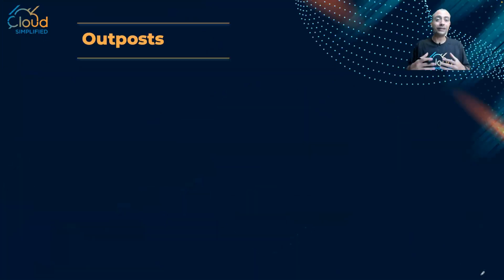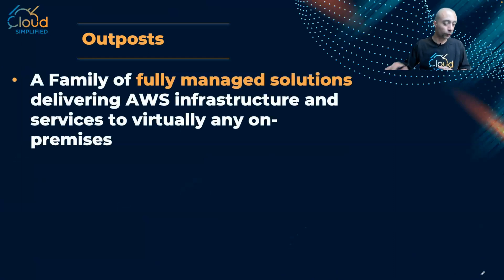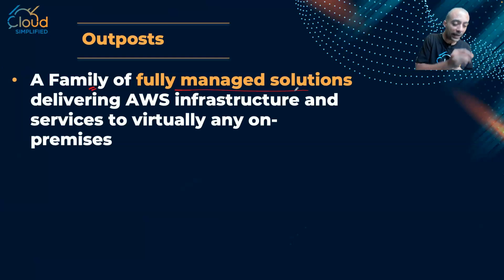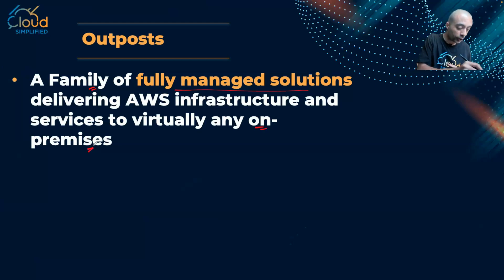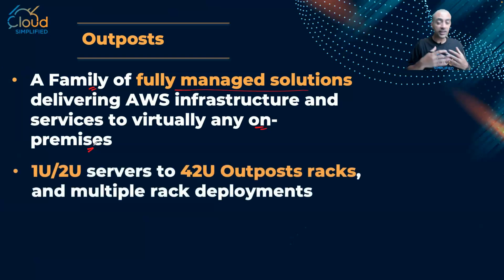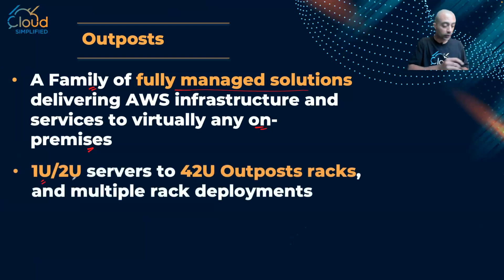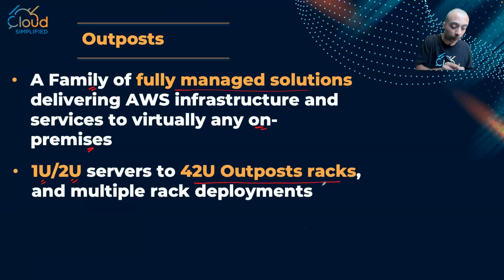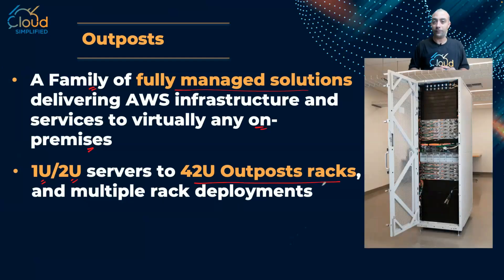So very simply, what is AWS Outposts? Outposts is a family of fully managed solutions that delivers AWS infrastructure to your on-premise and physical data center. Since this is a family, it might come in a one rack unit server, a two rack unit server, or a complete rack like this one. That's an example of an Outpost.